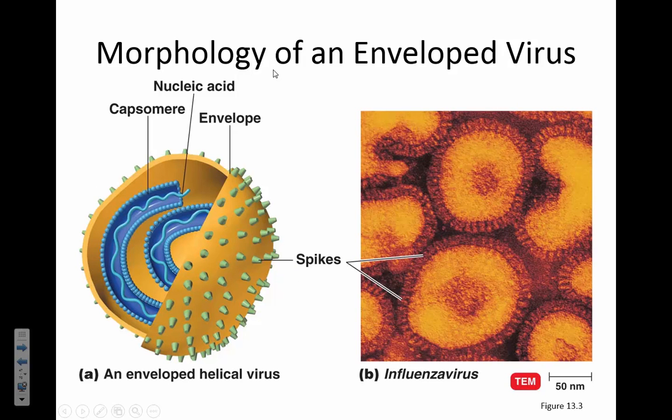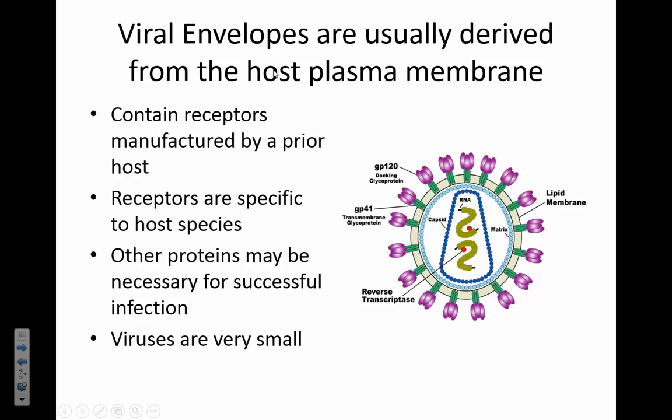Sometimes viruses have an envelope—a phospholipid bilayer with little protein spikes. Those spikes help the virus get into a new cell. The viral envelopes are usually derived from the host plasma cell membrane. Here is HIV: it has a bunch of little proteins that help it stick onto the next cell it's going to infect, embedded in a phospholipid bilayer it got from the previous cell it infected. It has a genome of RNA, and between the phospholipid bilayer and the RNA, there's a little protein capsid.